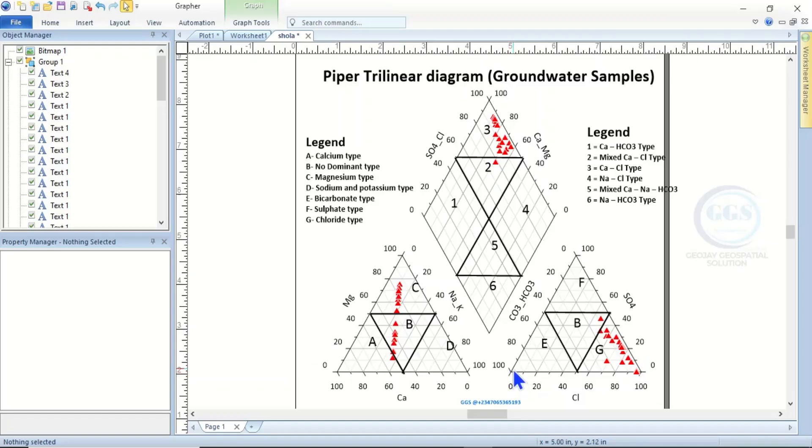So area G—you can see most of the samples fall here at G, which means they are chloride-rich. Many of the samples fall at G because chloride is at 100 here, so those samples are rich in chloride. G is chloride-rich.